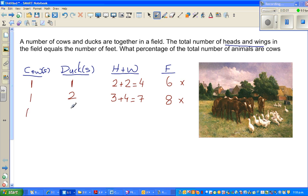I'll see what happens if you've got one cow and three ducks. So you've got how many heads? One plus three, so you've got four heads. And how many wings? Six wings. So that is ten. And how many feet? Four feet plus six feet? That's ten. So this is the right answer.